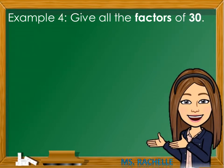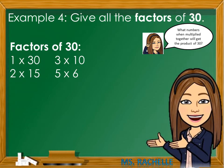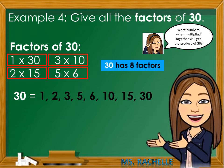Example number 4: Give all the factors of 30. Think, what numbers when multiplied together will get the product of 30? The factors of 30 are 1 times 30, 2 times 15, 3 times 10, 5 times 6. These are the only possible combinations to get the product of 30. Notice that 30 has 8 factors: 1, 2, 3, 5, 6, 10, 15, 30.